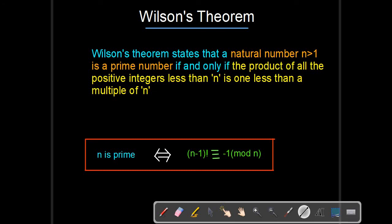Hey friends, in this video we are going to talk about Wilson's theorem in number theory. Wilson's theorem states that a natural number n greater than 1 is a prime number if and only if the product of all the positive integers less than n is 1 less than a multiple of n.